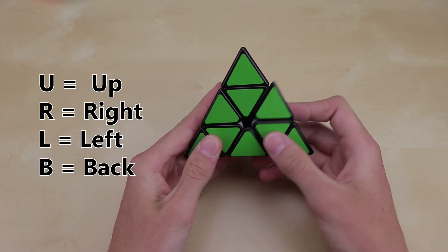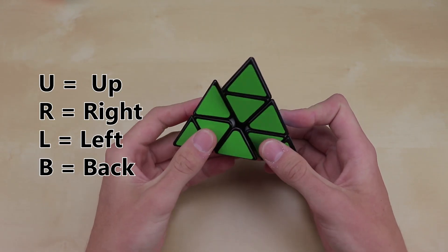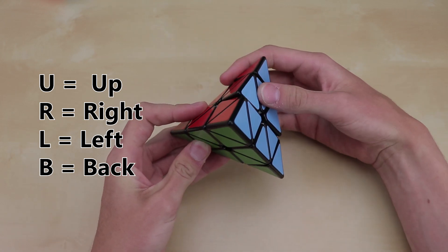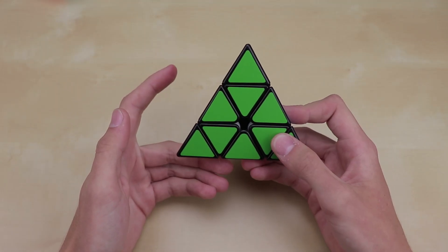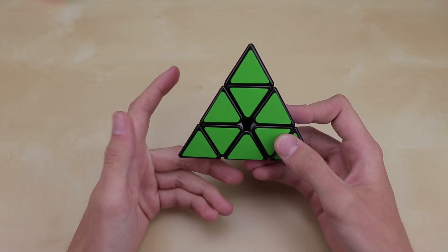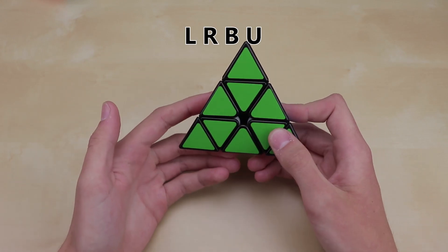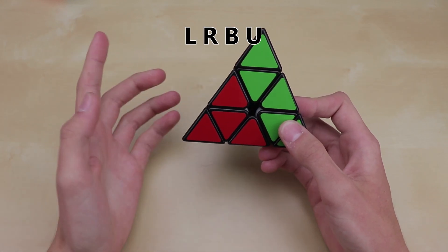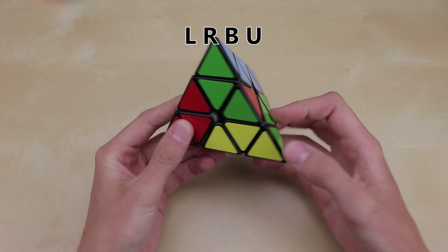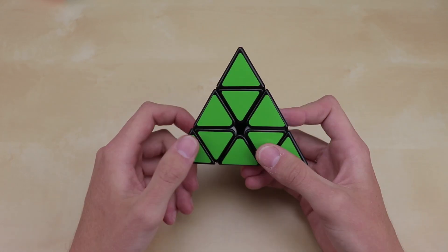There's the up move, or U, the right move, or R, the left move, or L, or the back move, or B. And of course, when you just see a capital letter by itself, that means turn that respective face one move clockwise. And so an L move would be like this, 120 degrees. An R move would be like this, a B move would be like this, and a U move would be like this.